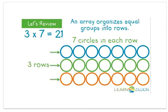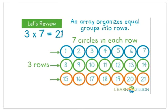Three equal groups of seven circles. There are twenty-one circles in all. Three times seven equals twenty-one.